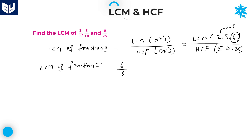For HCF, take the lowest number and its highest factor — the highest factor is always the number itself. Highest factor of 5 is 5. Now check whether 5 is a factor of the remaining numbers. 5 is a factor of 10 and also a factor of 25, so HCF of 5, 10, and 25 is 5. Therefore, the required answer for this question is 6/5.